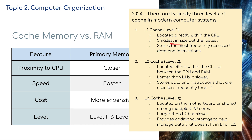Although the syllabus primarily covers level 1 and level 2 cache, there is also level 3 cache, which is located on the motherboard or shared among multiple CPU cores. It is larger than level 2 but slower, and provides additional storage to help manage data that doesn't fit into level 1 or level 2. So there are three levels of cache in total.